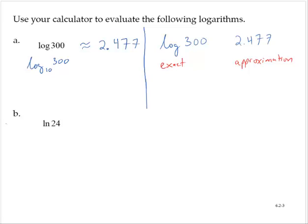Exercise B asks us to evaluate this L-N of 24. Now L-N represents the natural logarithm.